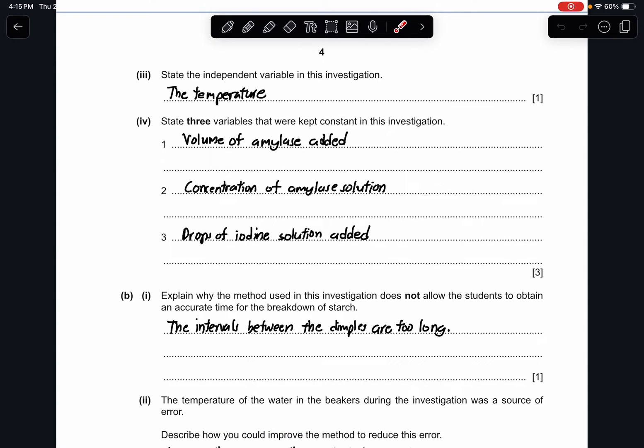For part B1, explain why the method used in this investigation does not allow the student to obtain an accurate time for the breakdown of starch. For me, the keyword here is accurate time. The reason for this is because the time intervals between each of this investigation is too long. Having a shorter time interval will be much more effective. So this will be the answer.